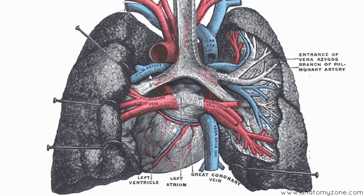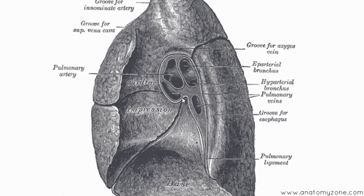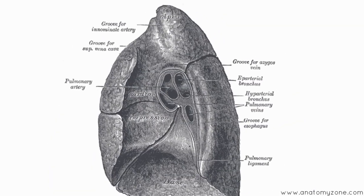You've got the pulmonary arteries in blue carrying deoxygenated blood from the heart to the lungs to receive oxygen, and you've got the pulmonary veins returning oxygenated blood from the lungs to the heart. This diagram here shows the hilum in a bit more detail, so you can see the structures entering this area called the hilum of the lung.